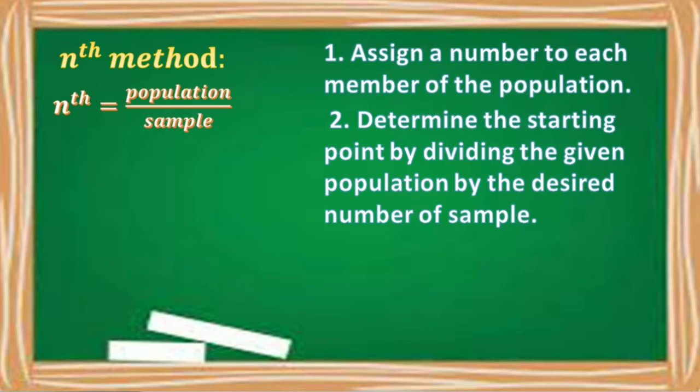So, we have the formula nth is equal to the population divided by the sample. Suppose our given population is 50 and we want only 10 as the number of sample.